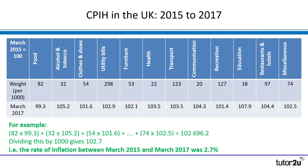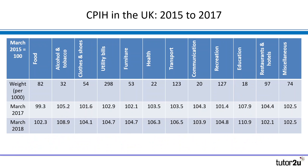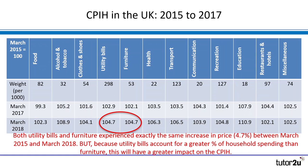What that means is that the rate of inflation between March 2015 and March 2017 was 2.7%. Now let's look at the data with an extra row added for the price index for each category in March 2018. We can follow exactly the same process to calculate the overall weighted price index. There's a really great example here of why it's important to use weights: the price index for utility bills and for furniture in March 2018 is identical — both experienced exactly the same price increase of 4.7% between March 2015 and March 2018.